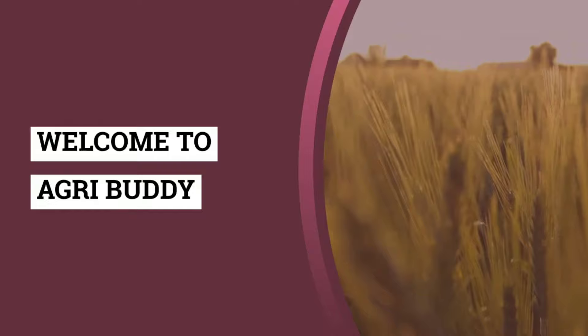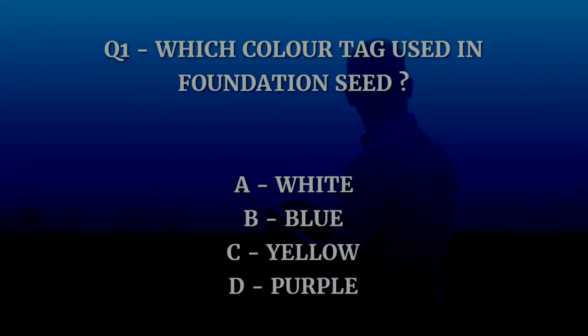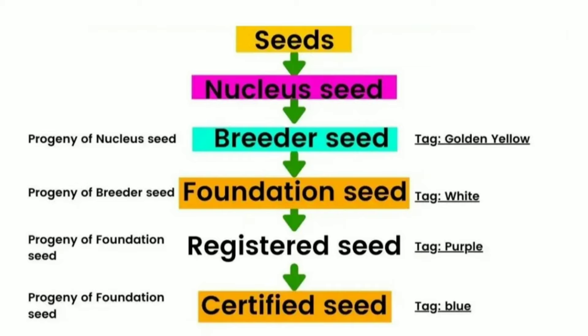Hello friends, welcome everybody. Today the video contains some important questions about agriculture with their explanations. The first question is: which color tag is used in foundation seed? The options are white, blue, yellow, or purple. The correct answer is white. As you can see in the flowchart showing seeds and their progeny with respective tag colors: breeder seed has a golden yellow tag, and foundation seed has a white tag.